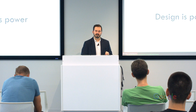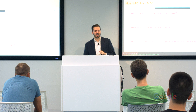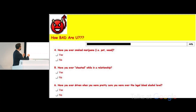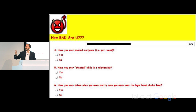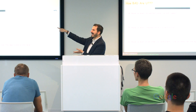Design is power. One of my favorite experiments was done by Leslie John, Alessandro Acquisti, and George Lowenstein at Carnegie Mellon University. They got several people in to answer a series of questions in a survey on a screen. The questions ranged from banal to relatively intimate to incredibly intimate — have you ever smoked marijuana? Have you ever cheated while in a relationship? Have you ever driven when you were pretty sure you were over the legal blood alcohol level? What's the first thing you notice when I put this screen up?